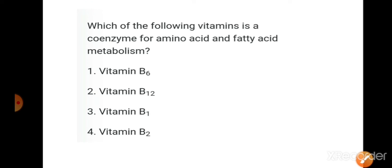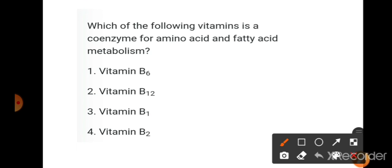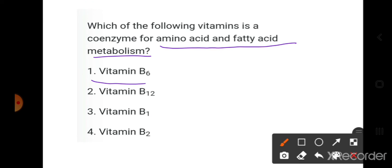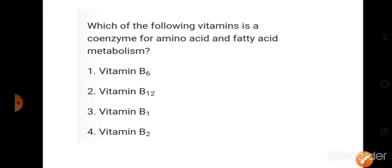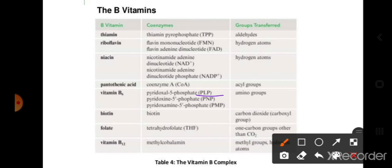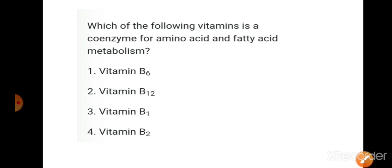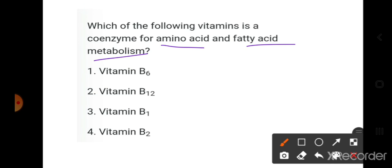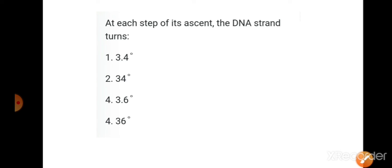Next question: which vitamin is a coenzyme for amino acid and fatty acid metabolism? Vitamin B6's coenzymes — pyridoxal phosphate (PLP), PNP, and PMP — act as coenzymes for both amino acid and fatty acid metabolism. So vitamin B6 is the right answer.